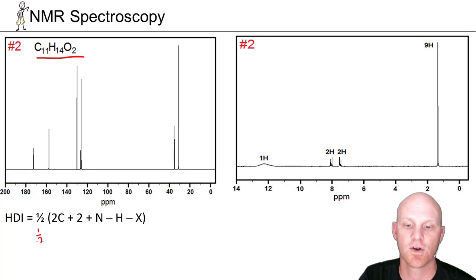And so in this case, one half times 2 times 11 plus 2, no nitrogens, minus 14 and no halogens. Oxygen doesn't affect the calculation at all here. So 2 times 11 is 22, plus 2 is 24, minus 14 is 10, and half of that is 5.